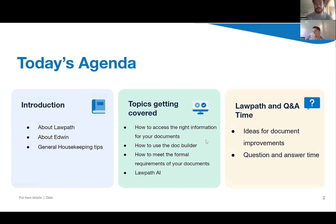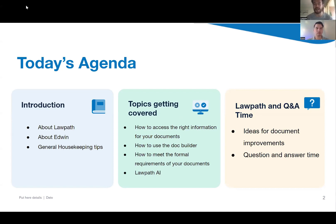For those of you visiting us for the first time: Law Path is an Australian-based online legal platform based in Sydney, but we have clients across the entire country. We've assisted over half a million small businesses in the last ten years, whether through company registrations, providing documents, or offering affordable legal, accounting, and tax aid. We're tailor-made for startups on a largely subscription-based model, and we're proud to have saved Australian small businesses over one hundred million dollars in legal fees.